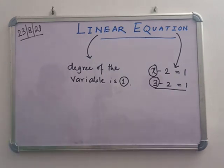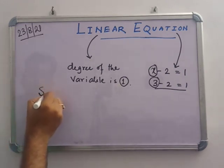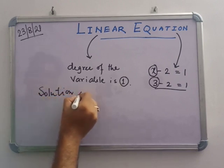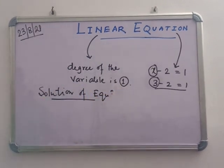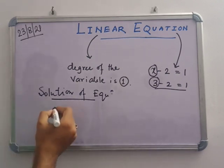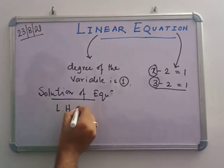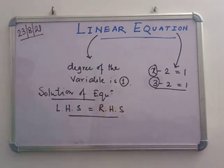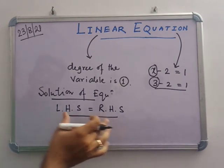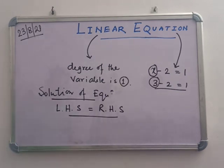Both sides are equal. Now, how do we find the solution of an equation? The solution means you have to see that the LHS and RHS are equal. LHS means left hand side and RHS means right hand side. You have to see that both sides are equal — then this is the solution of the equation.